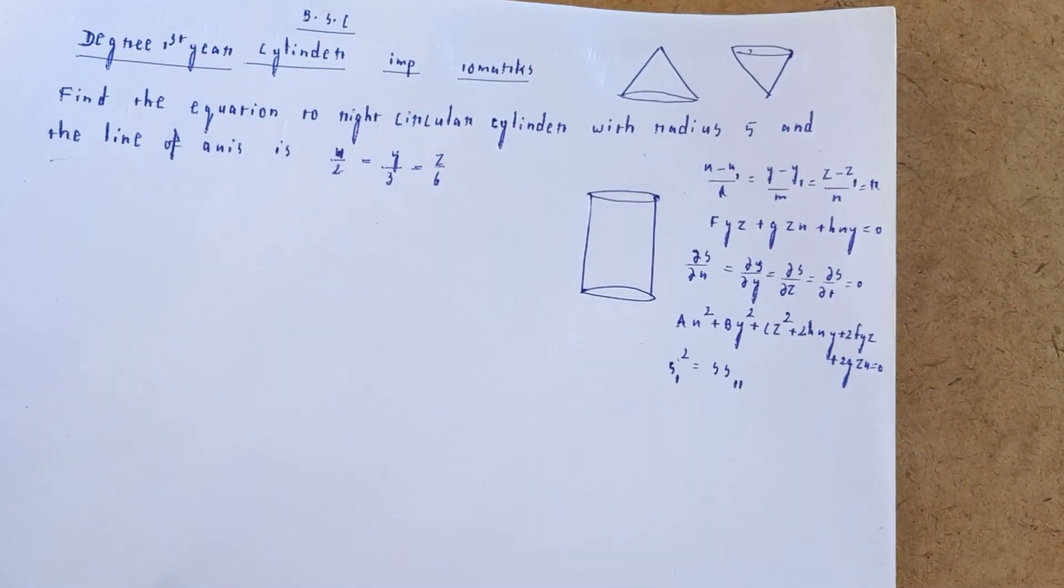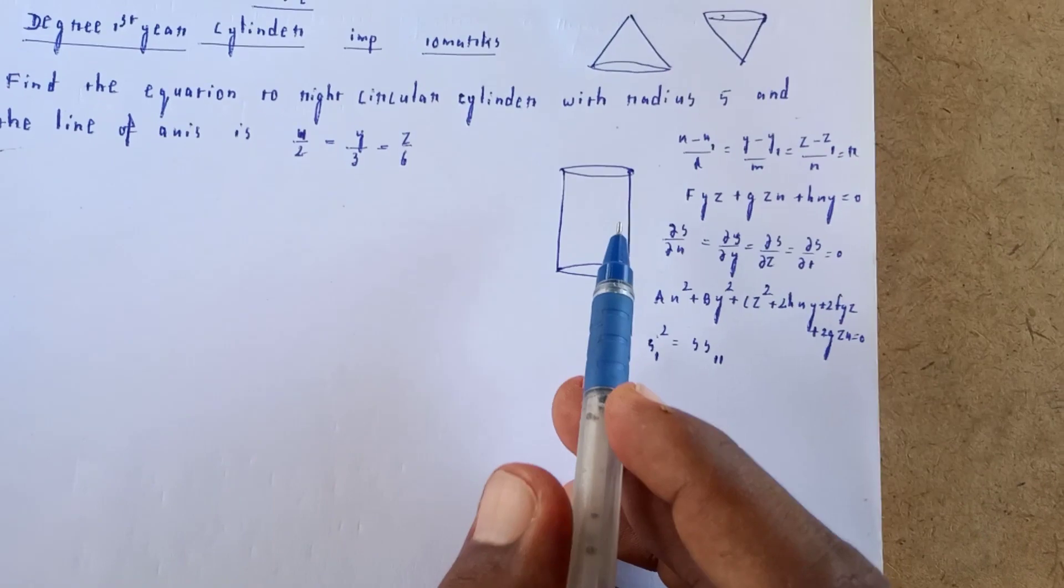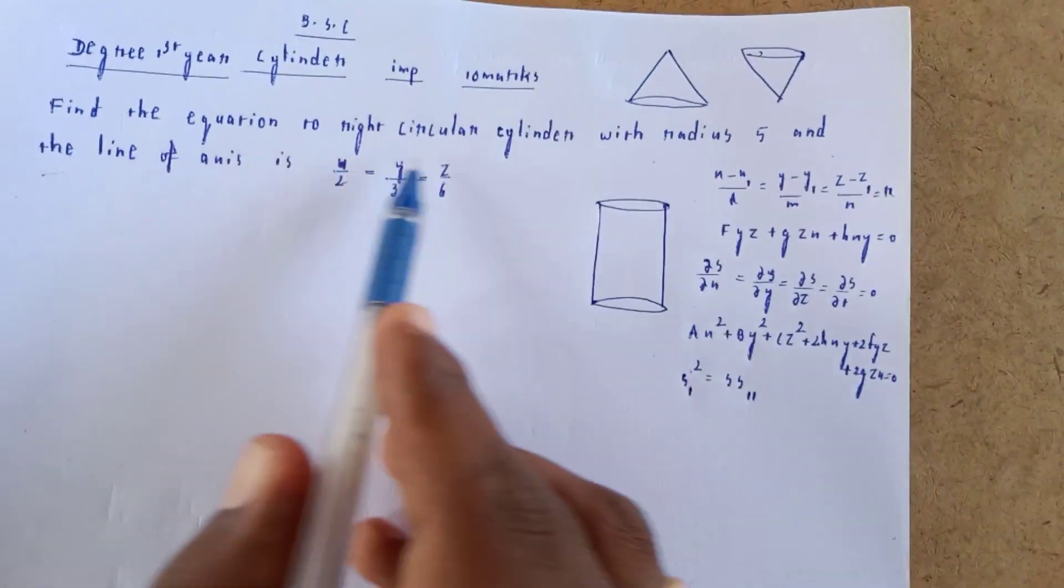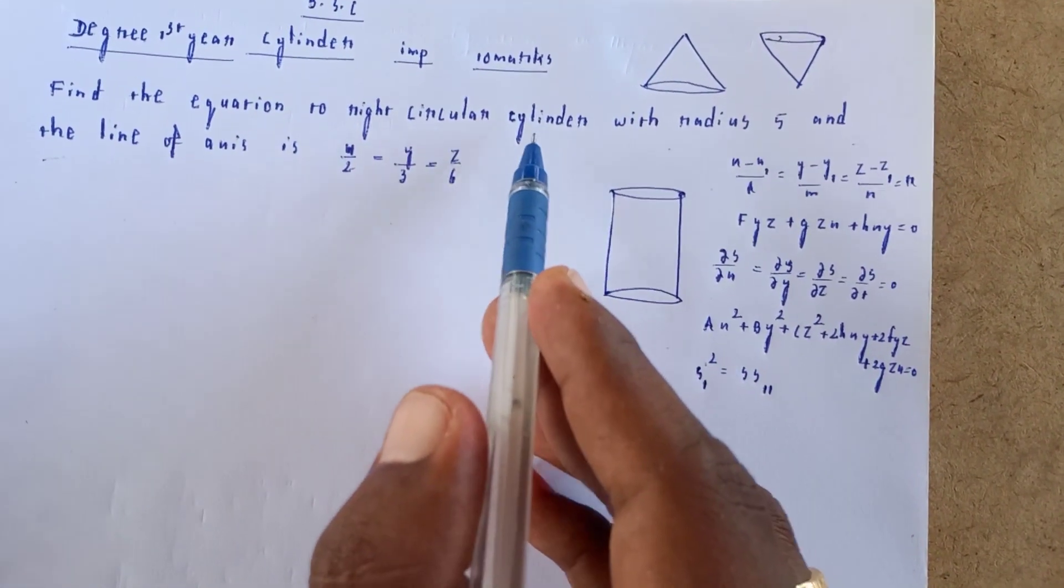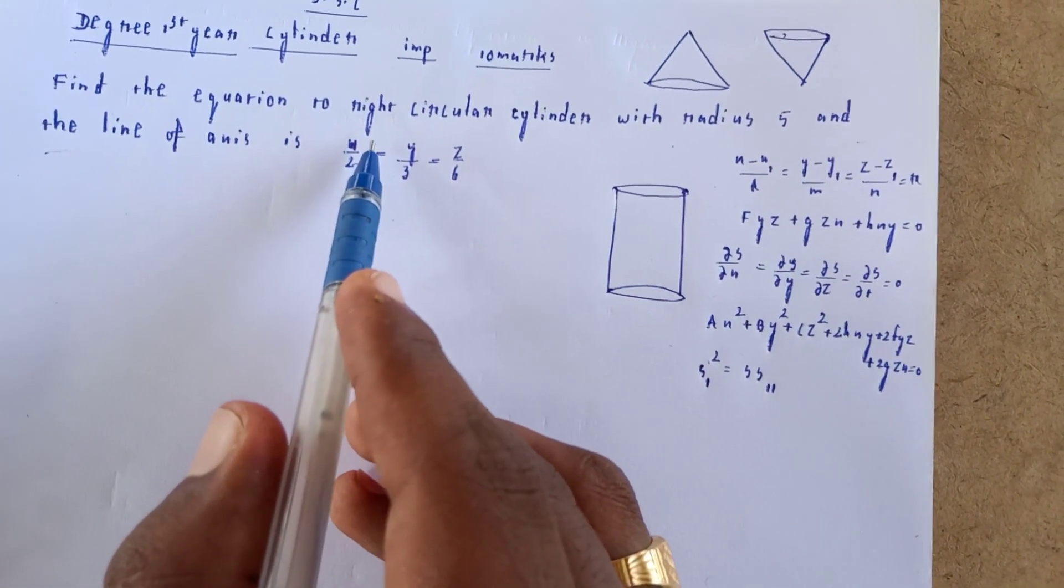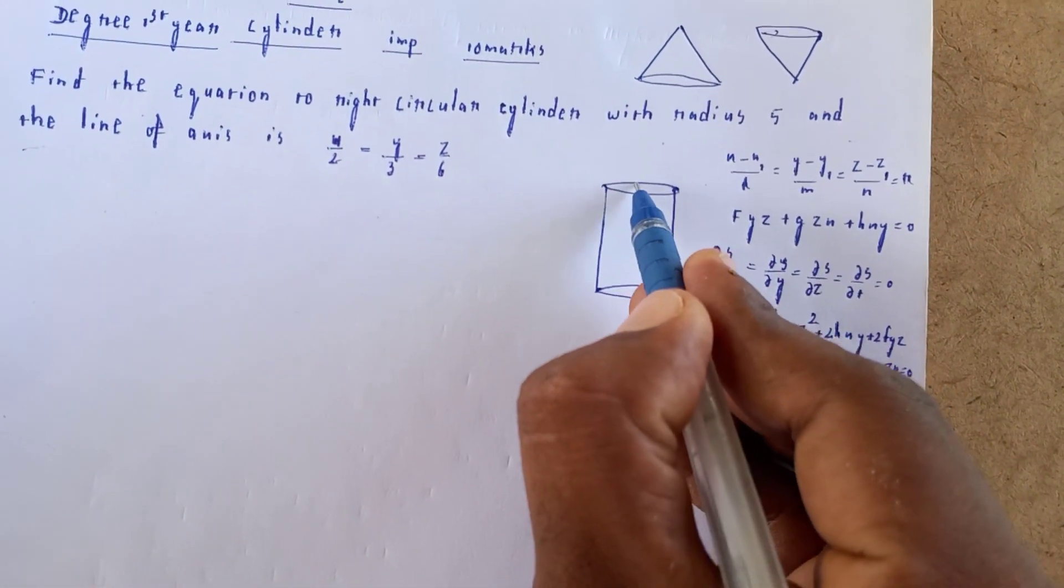Now for the cylinder. The cylinder generator is the same model. For this problem, it's an important 10-mark question.